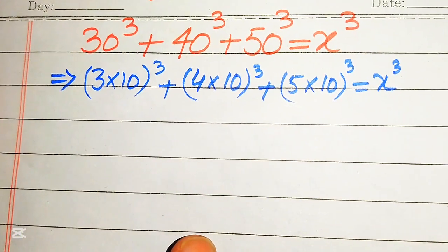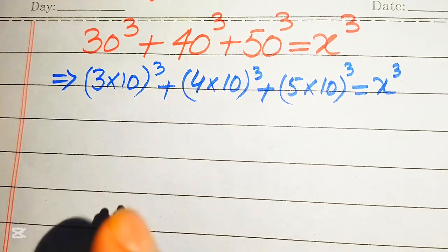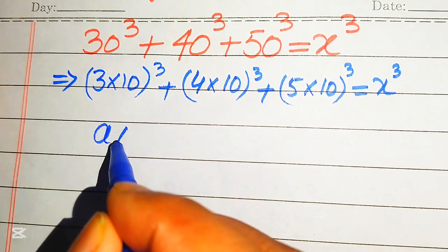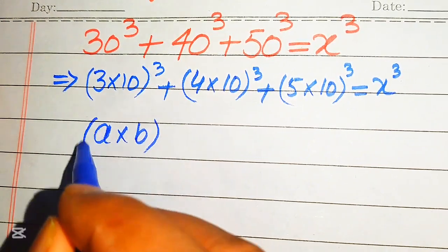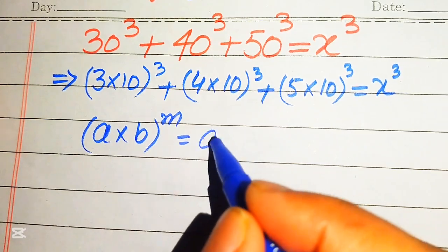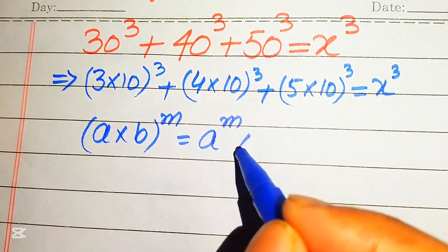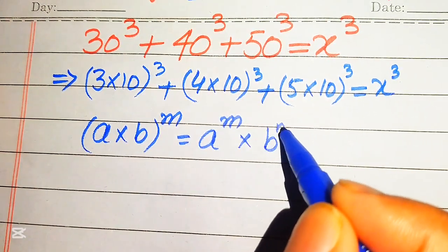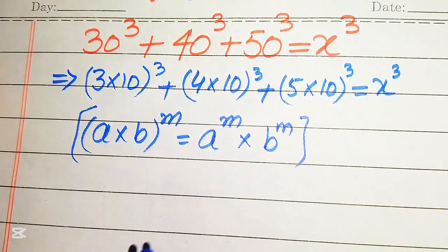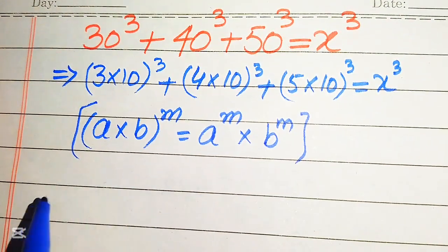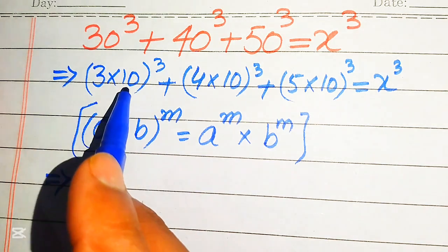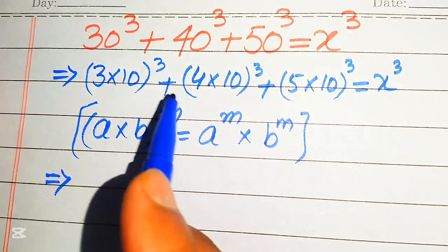Now we apply the exponent law. We know that if you have a multiplied by b, whole to the power m, then we write it as a to the power m multiplied by b to the power m. According to this exponent law, we apply the cube separately on both values in each term.